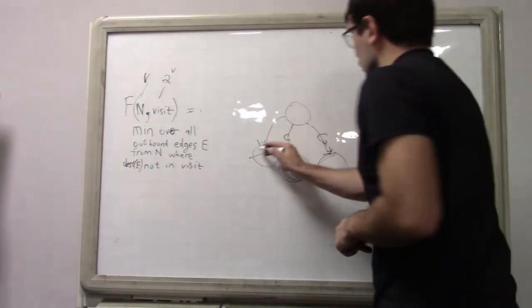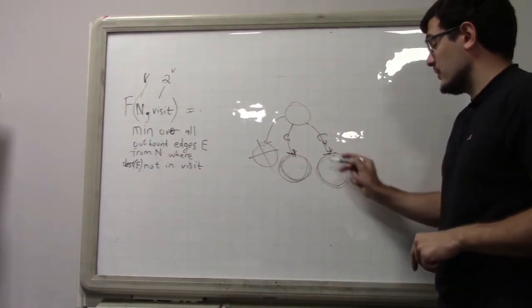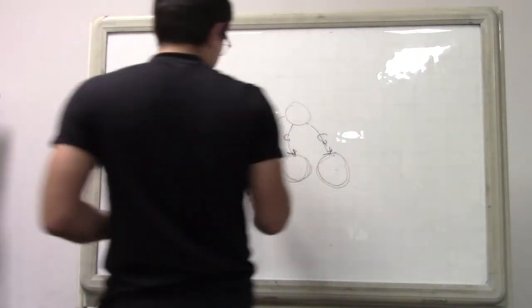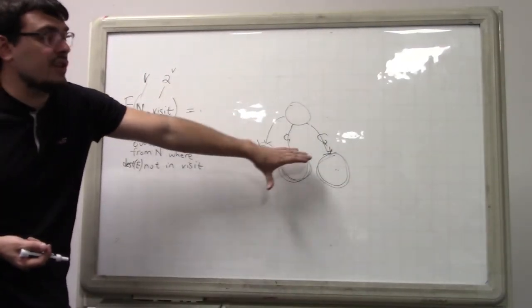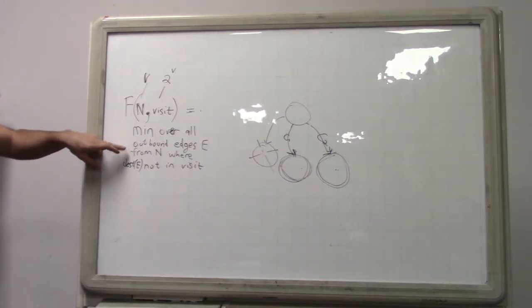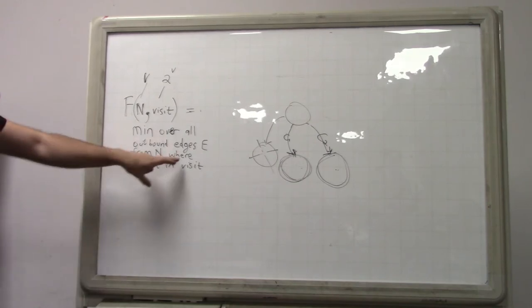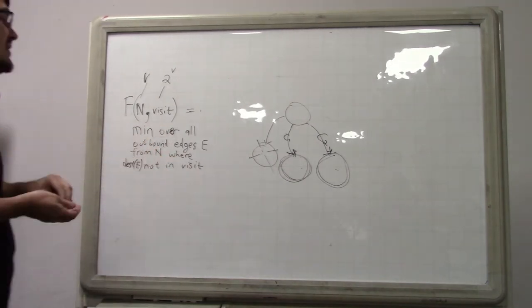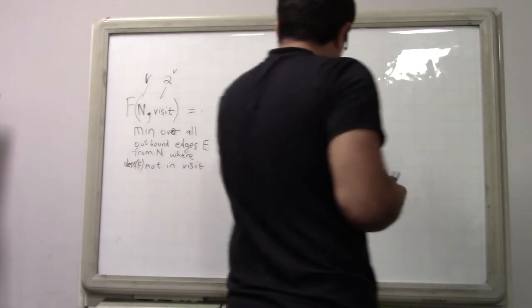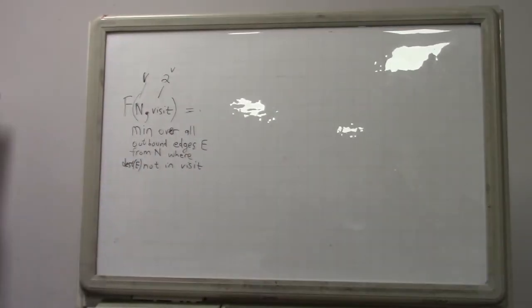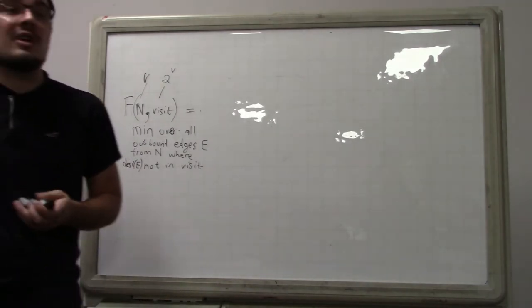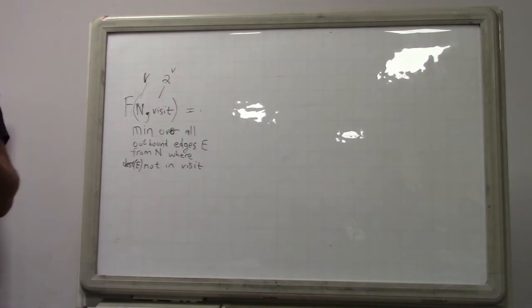That the destination node... Destination of E... That the destination node of E is not in this visited set. So if you have three edges, you will loop over all of them, and you will just focus on the ones where the edge leads to a vertex that has not been visited. If these are the three outbound edges and this vertex is visited, we will only go to the other two. So, minimum over all outbound edges E that are outbound from N, where destination of E not in this visited set. So minimum over all of those... What happens if there are no such edges? Then you have to return positive infinity, right? You have to return an infinite cost, so that whatever call you made to get here knows that this is not an option.